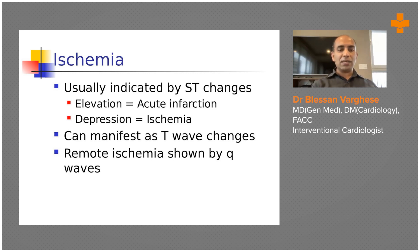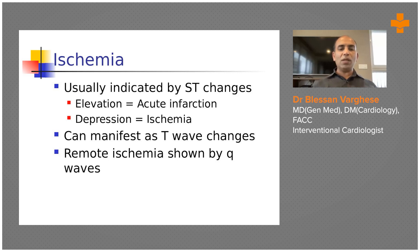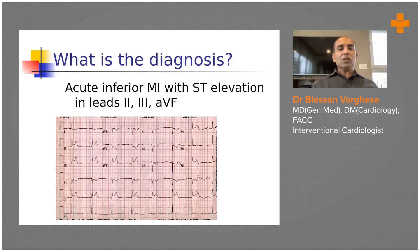Regarding ST changes in ischemia: whenever there is ST elevation it indicates acute infarction, and whenever there is ischemia without complete occlusion - non-transmural - there is usually depression in the ST segment. Sometimes you can have only T wave changes, and there can also be Q wave changes which we'll come to later.